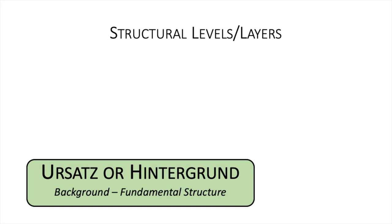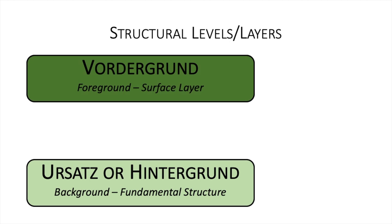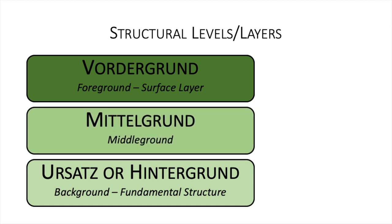The easiest layer to see is what we call the surface layer, or the foreground. This is basically everything that's happening in the music in all its detail. Then we try to simplify this layer, taking away notes that are only really there for decoration and leaving the most important ones that give the music its meaning. This is called the middle ground. We move from the foreground to the middle ground by a process called reduction, because we're reducing things to a simpler, more basic level. This is probably the most important skill to master for Schenkerian Analysis.